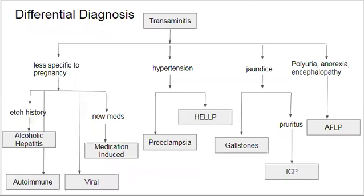This is a chart to help think through the differential. If we have a case on the exam where a patient has a transaminitis and we're trying to figure out which path to go down for the exam question, the first category is diseases that are less specific to pregnancy, but we still might be tested on and need to think about.